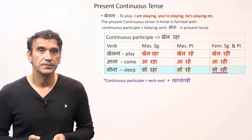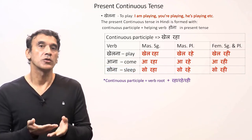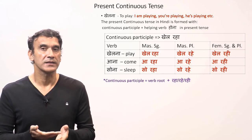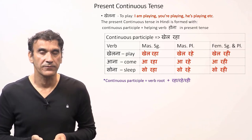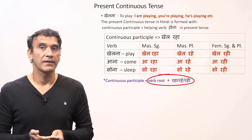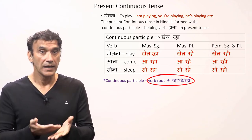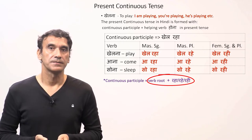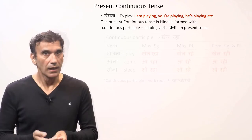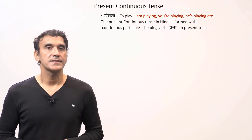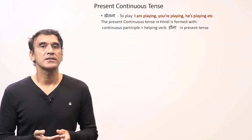And the feminine singular and plural form is 'so rahi'. So you can see how easy it is to make the continuous participle: the root of the verb plus 'raha', 'rahe', or 'rahi' based on the number and gender.